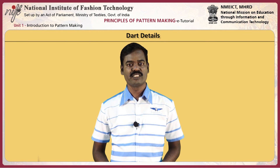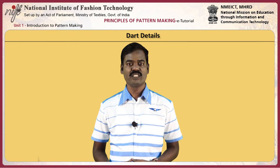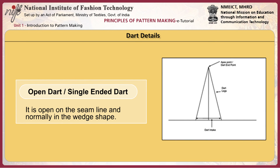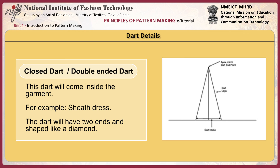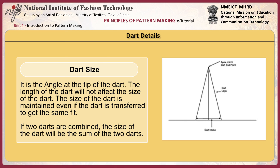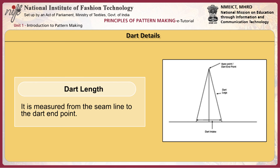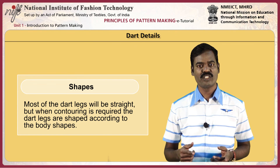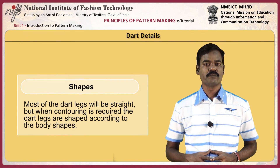There are various kinds of dart details such as open dart, single-end dart, closed dart or double-ended dart, dart size, dart length, and dart shape. An open dart or single-ended dart is open on the seam and is normally wedge-shaped. A closed dart or double-ended dart comes inside the garment — for example, in a sheath dress — has two ends, and is in a diamond shape. Dart size is the angle at the tip of the dart; the length of the dart does not affect the size. The dart size is maintained even if the dart is transferred to any other position to achieve the same fit. If two darts are combined, the resulting dart size is the sum of the two. The dart length is measured from the seam line to the dart end point. Most dart legs are straight, but when contouring is required, the dart legs are shaped according to the body shapes.